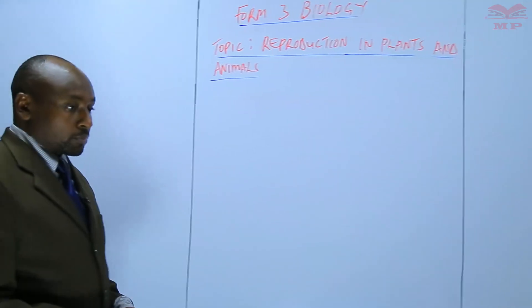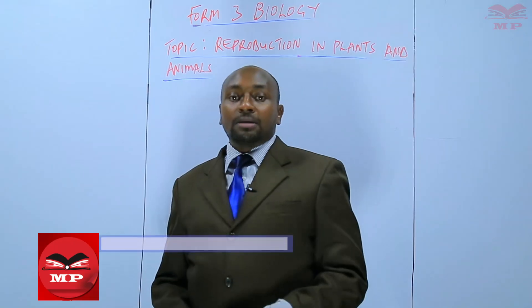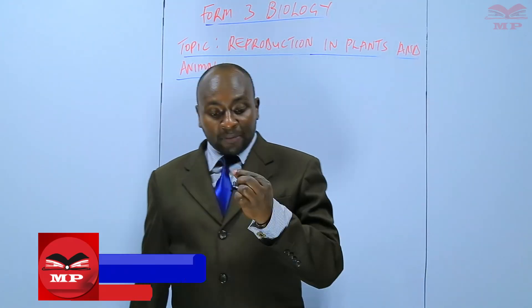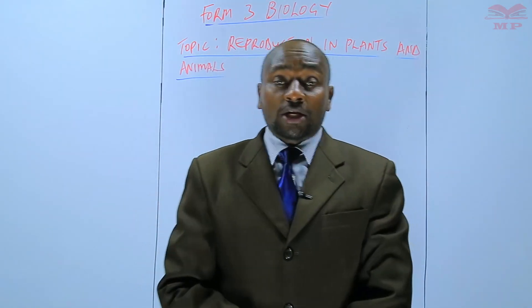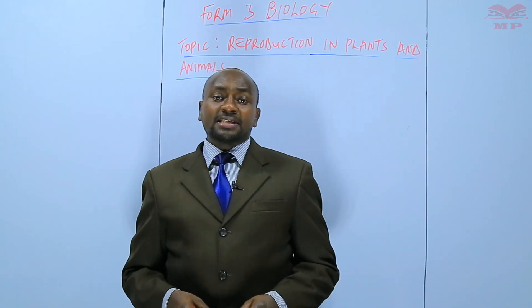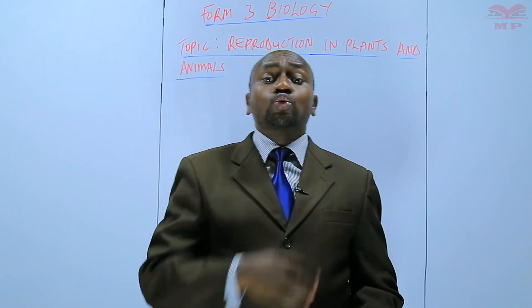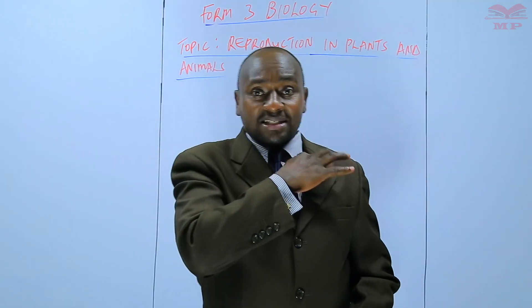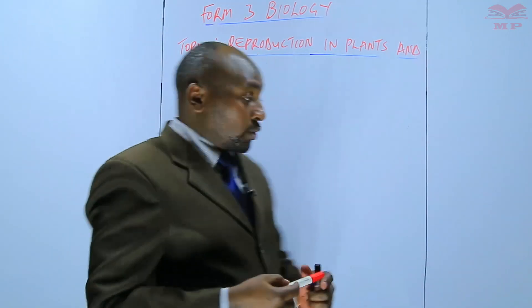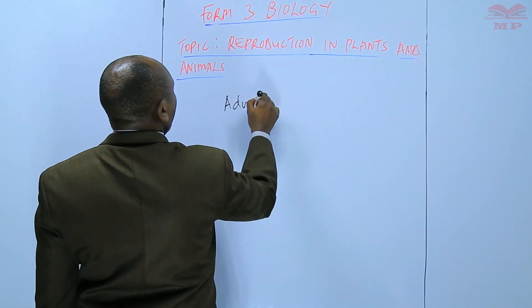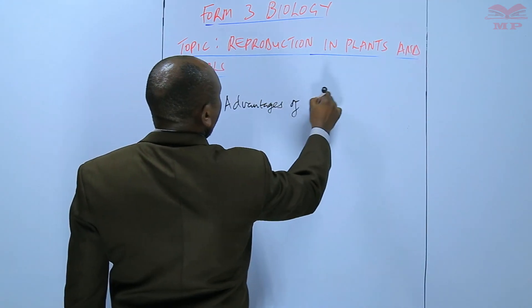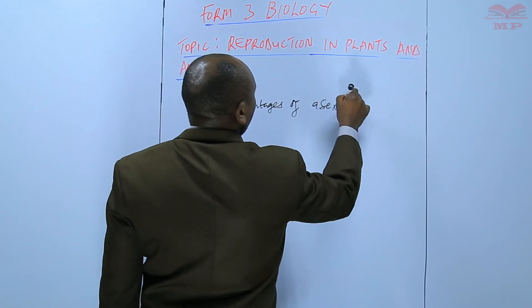Welcome to Manifested Publishers. Hello learners, my name is Stephen Kariungi and we continue with the topic of reproduction in plants and animals. Today we are going to discuss the last part of this particular topic: the advantages and disadvantages of the two types of reproduction — asexual reproduction and sexual reproduction. We are going to start with the advantages of asexual reproduction.